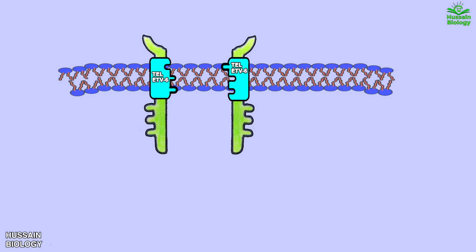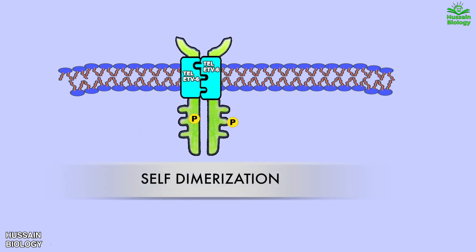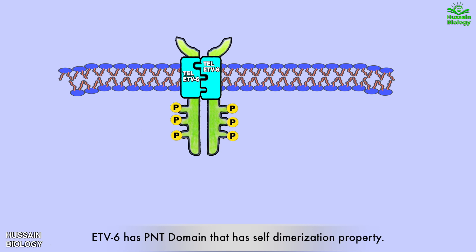Getting back to the receptor: the oncogene-encoded fusion protein replaces the normal extracellular domain of the PDGFR receptor, thereby generating a modified PDGFR receptor. This receptor itself dimerizes the two monomers of the PDGFR receptor, initiating the signal without the presence of any extracellular ligand. It must be noted that it is the PNT domain in the ETV6 protein which has the capability of self-dimerization.